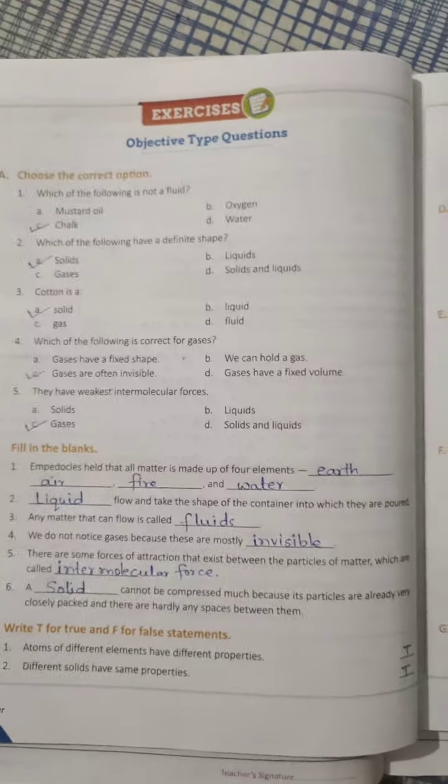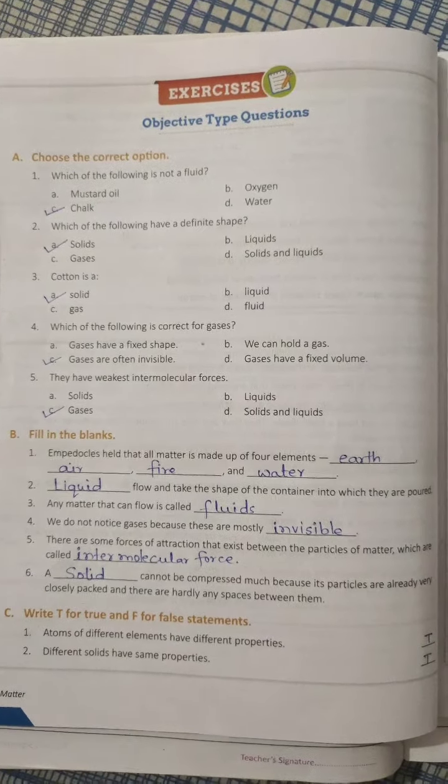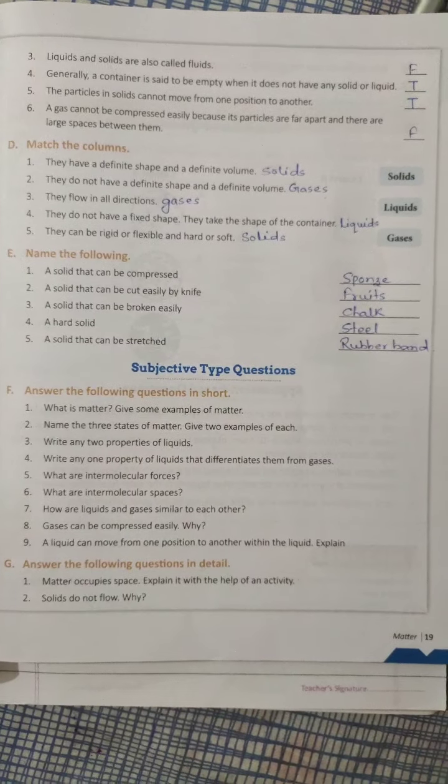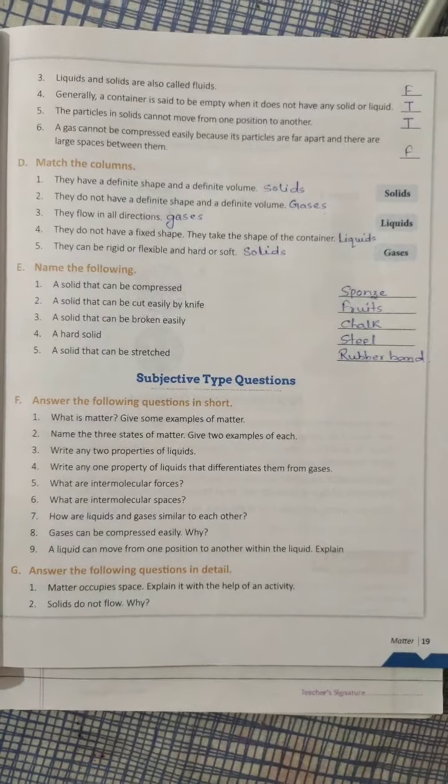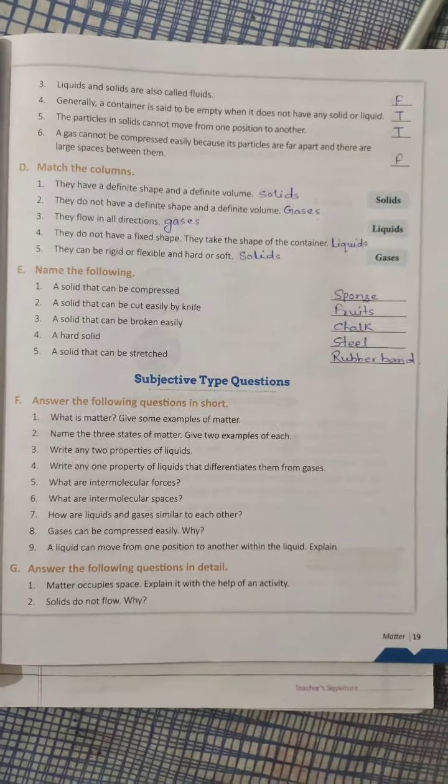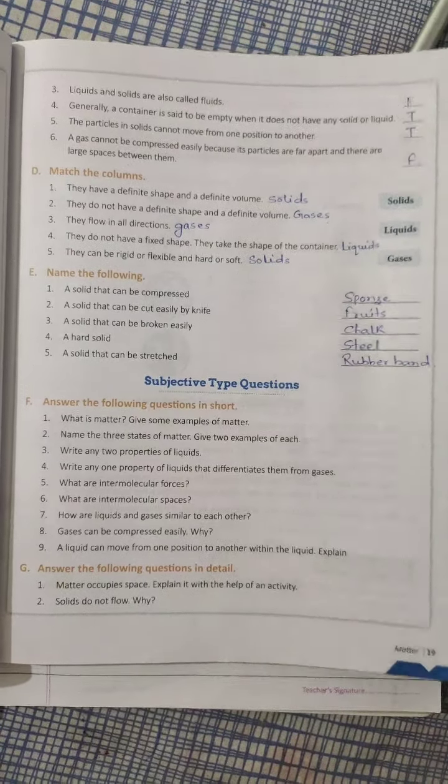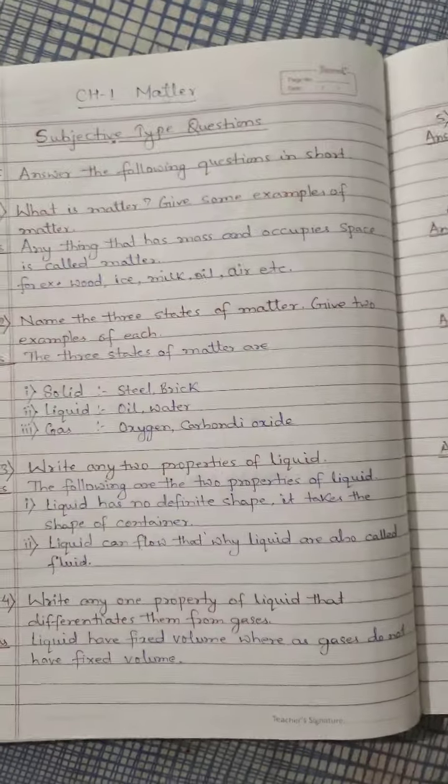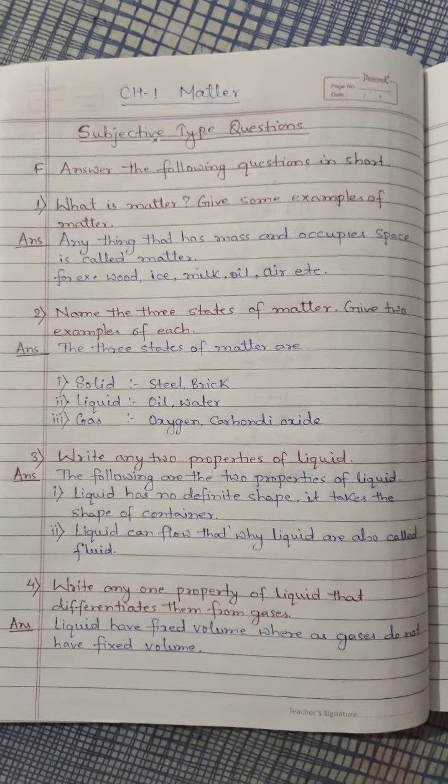I am keeping the mobile on the page and you can write it by pausing the videos. Like true false, choose the correct option, fill in the blanks, then after one word answer, match the columns. You can write it by pausing the video. Now for the subjective type of questions, I have written it for you. Like first, all questions are here.